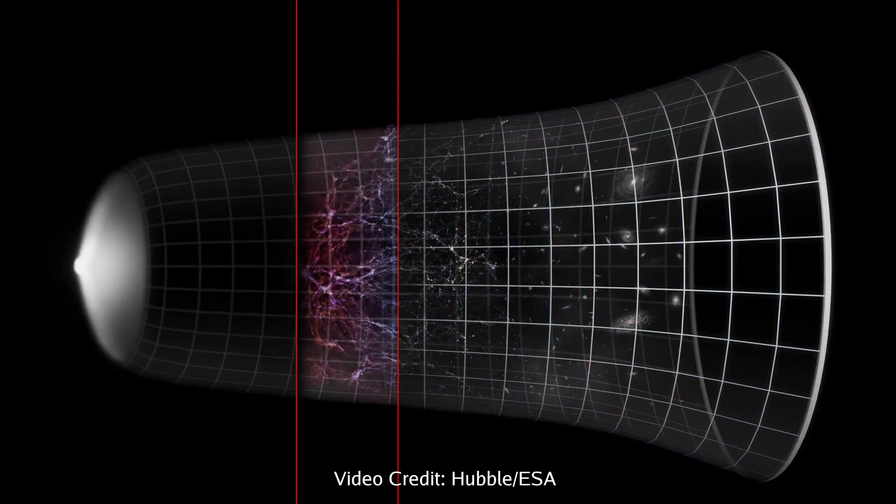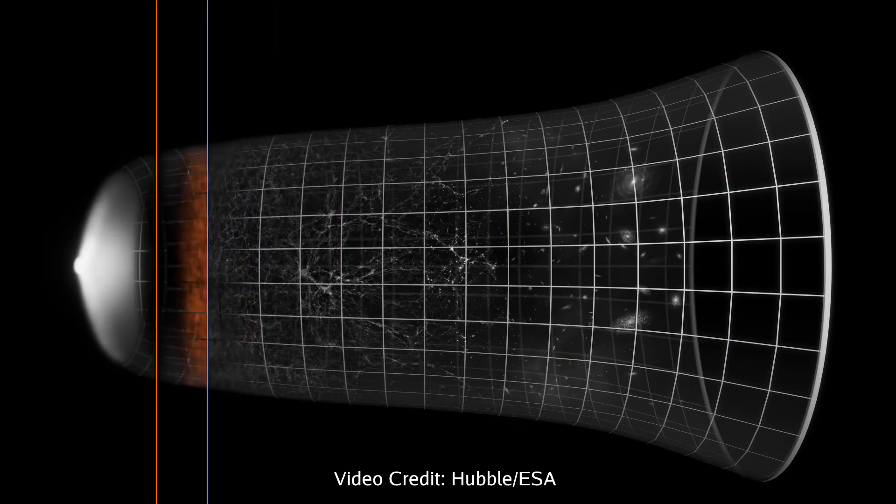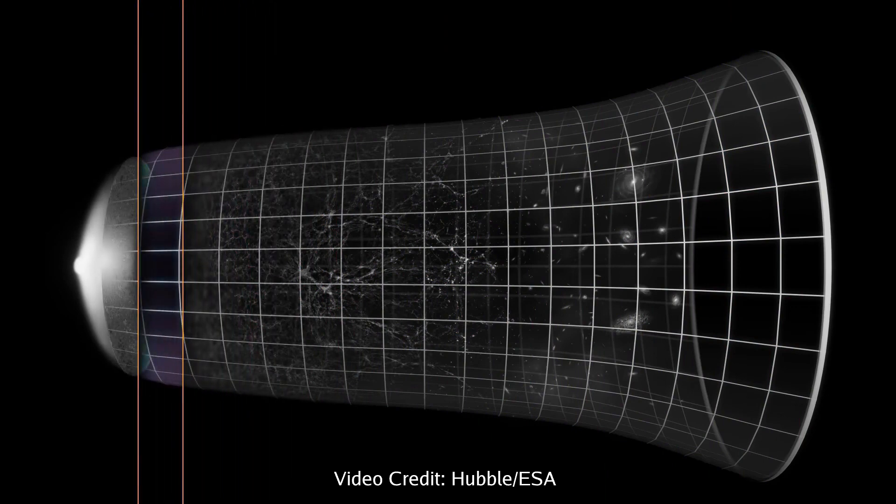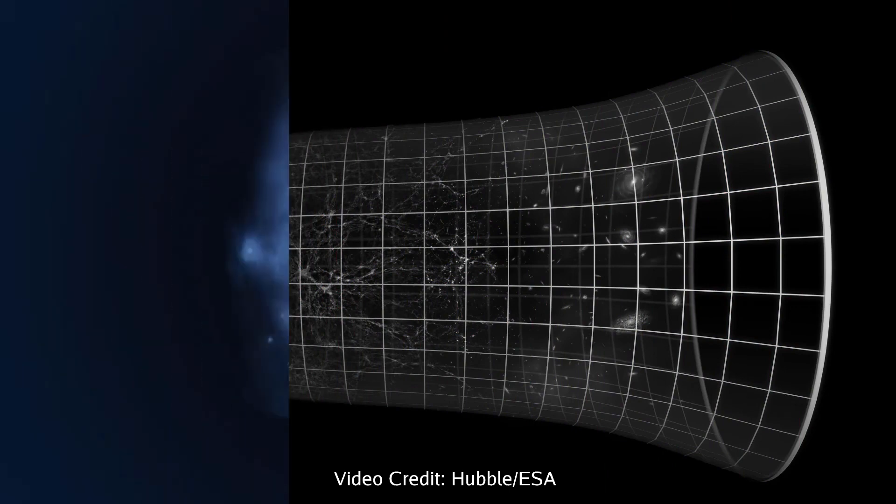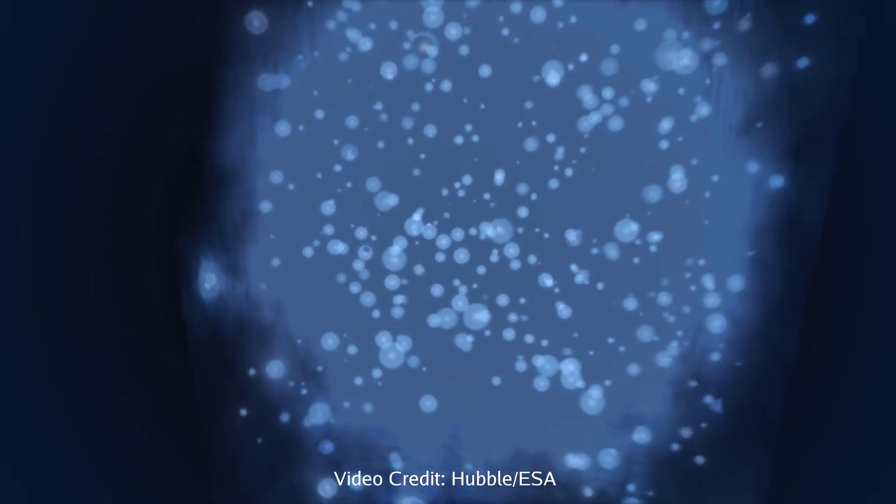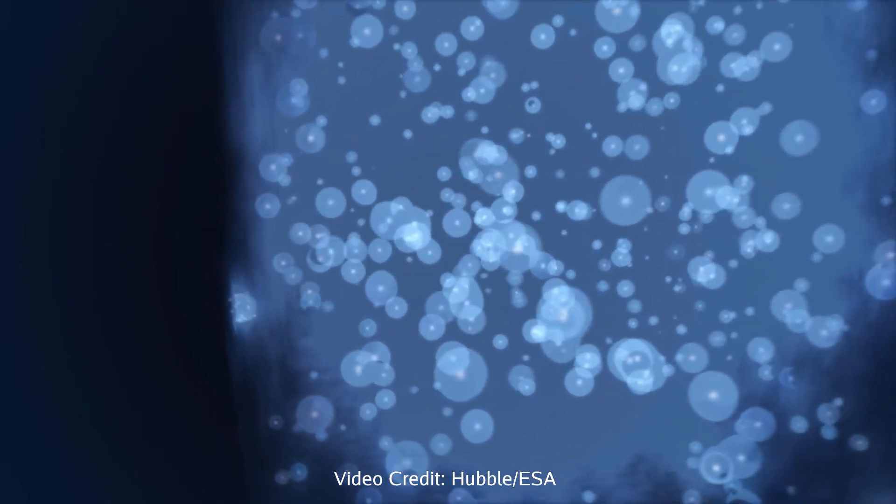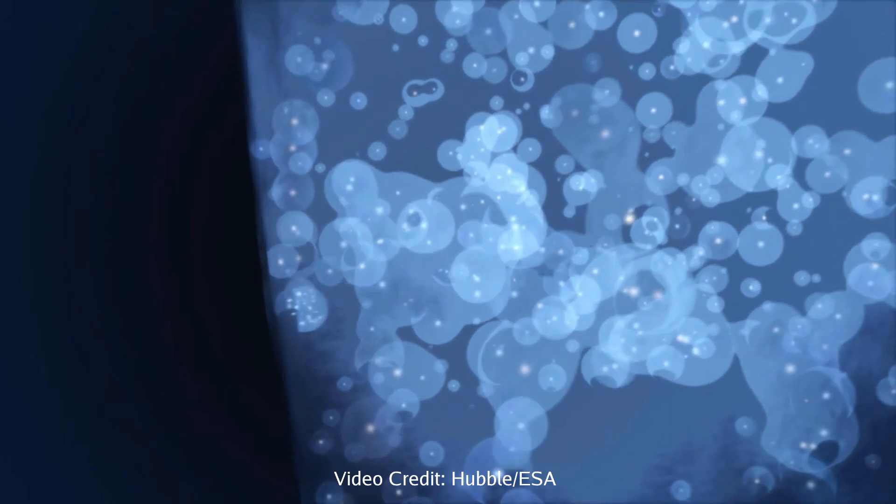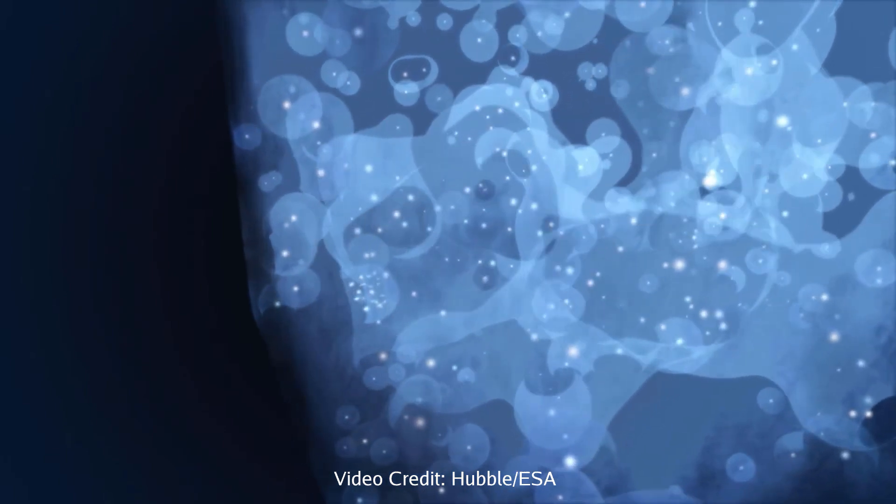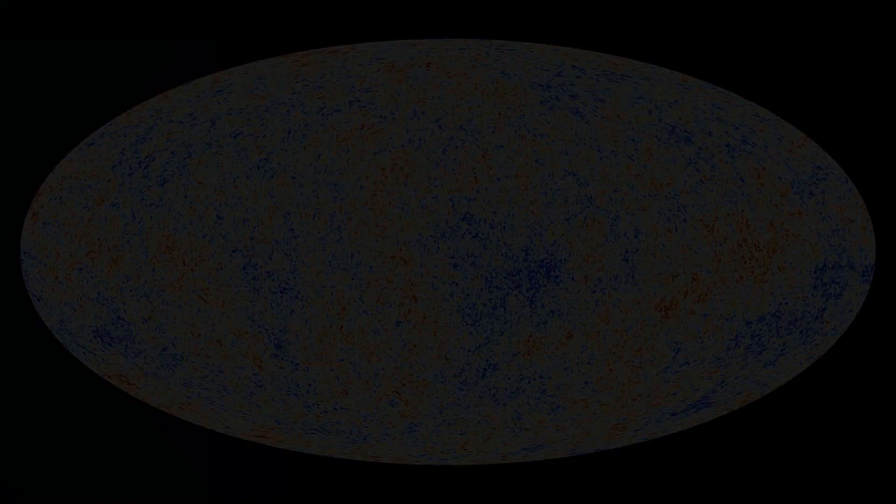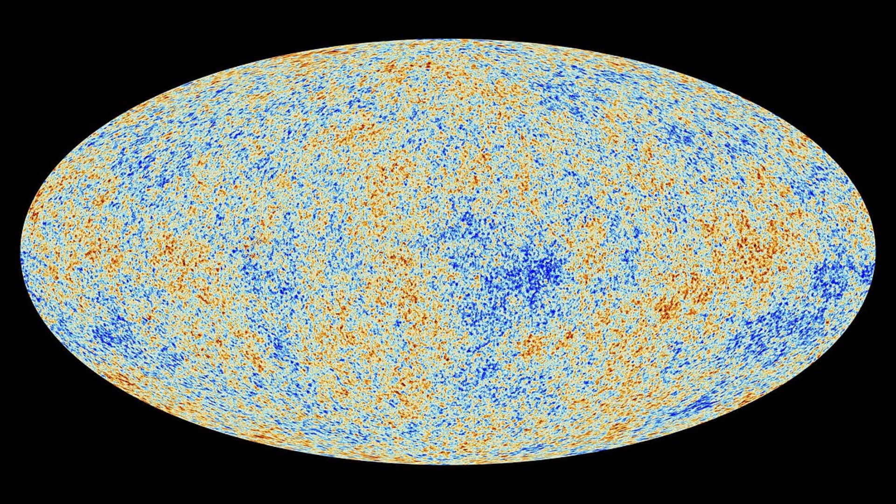When these photons were released, they were in the visible part of the spectrum. But as the size of the universe has increased by a factor of 1000 since decoupling, the wavelength of the light has been stretched into the microwave range. These microwaves can be used to construct an image of the universe when it was only 300,000 years old.